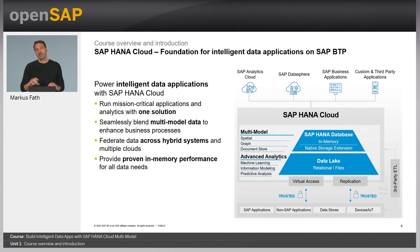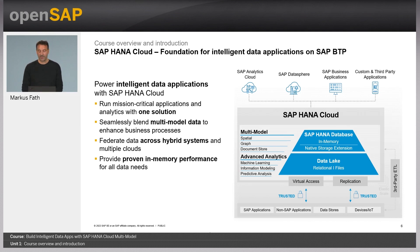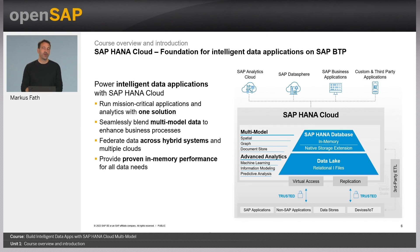Beneath the in-memory database layer, there is the so-called data lake. It offers disk-based storage of relational data — that means tables — as well as files, be it CSV files or Parquet files. And finally, there is a layer that provides virtual access to remote systems and includes data from those remote systems in an application that sits on top of SAP HANA Cloud. Besides virtual access, there are also tools to replicate data from third-party stores or applications into SAP HANA Cloud.